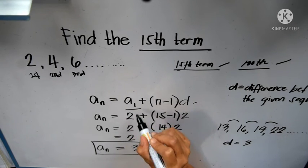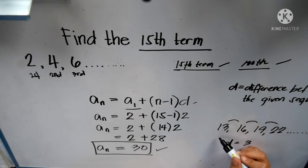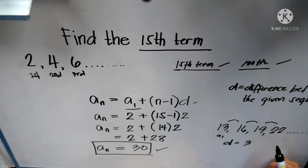And then our a sub 1 is always the first number. So 13 is the a sub 1 in this sequence.